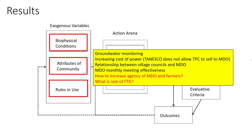In terms of how decisions are made, the relationship between MDO and village councils is a tricky one — the village councils have a bit more control. While there are monthly meetings where residents can air their grievances, changes cannot be made to the rules without village council approval, and they only meet once a year. So how do we increase agency of MDO and farmers, and what's the role of FTK when this NGO really wants to stay outside and allow the community to take control over management of the farm?